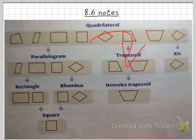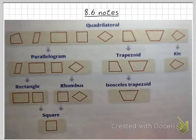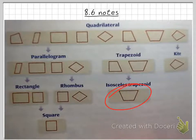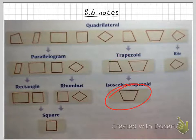Moving on to the next column, we have a trapezoid. A trapezoid is a quadrilateral with exactly one pair of parallel sides. Getting a little more specific than that is an isosceles trapezoid, which is a trapezoid where both legs are congruent.